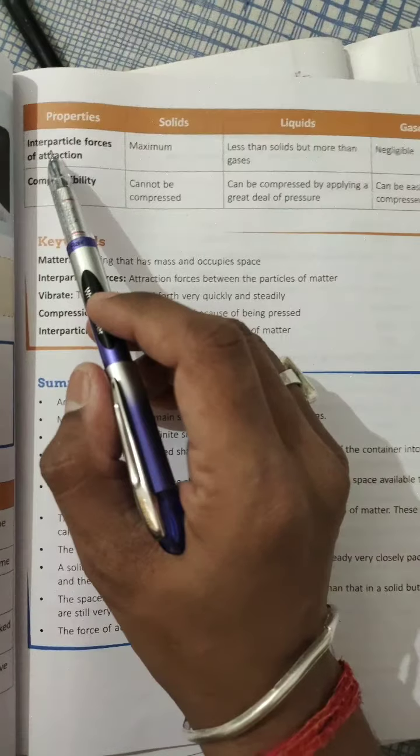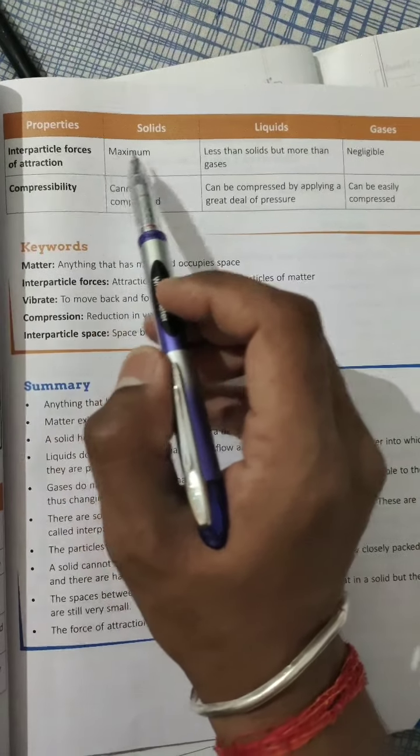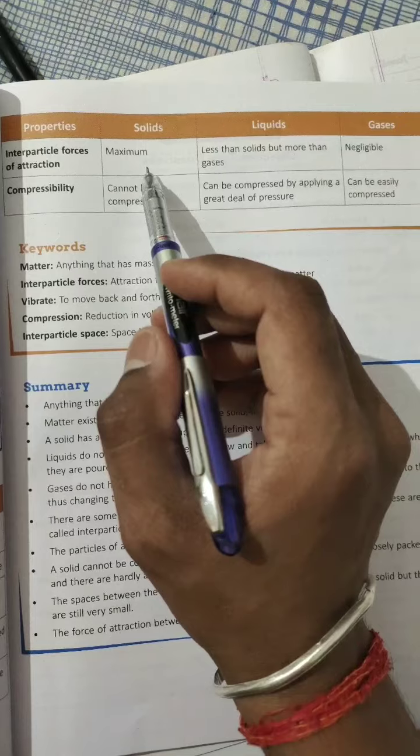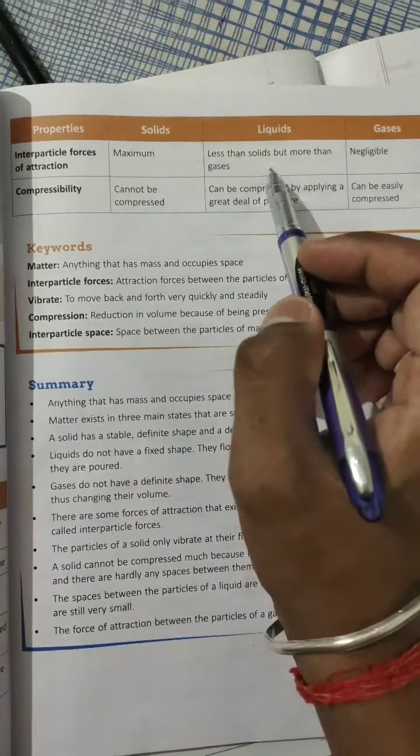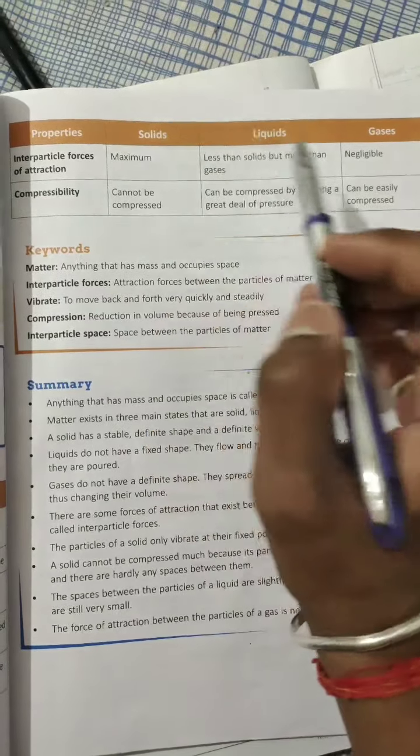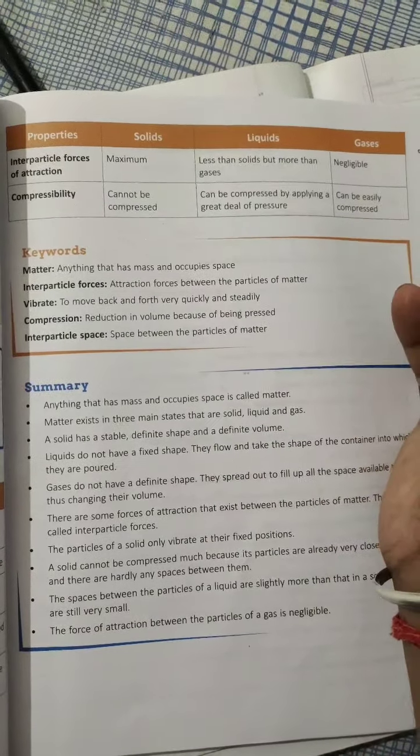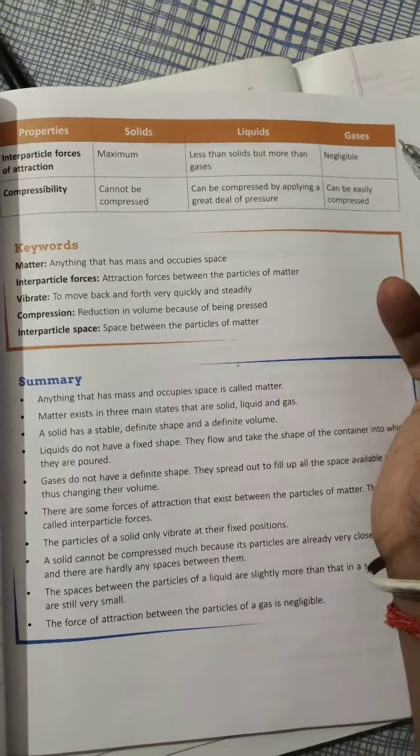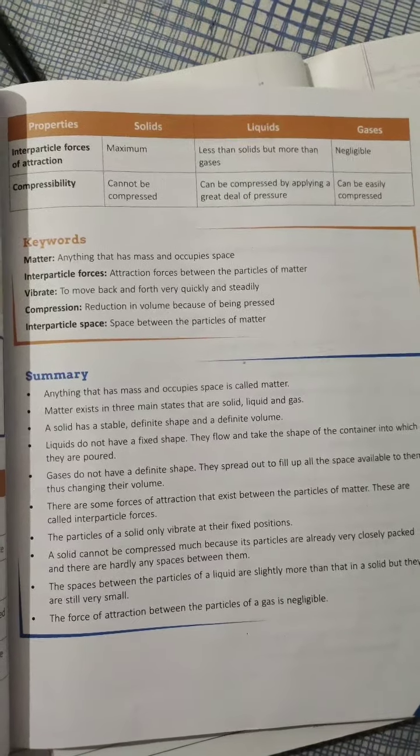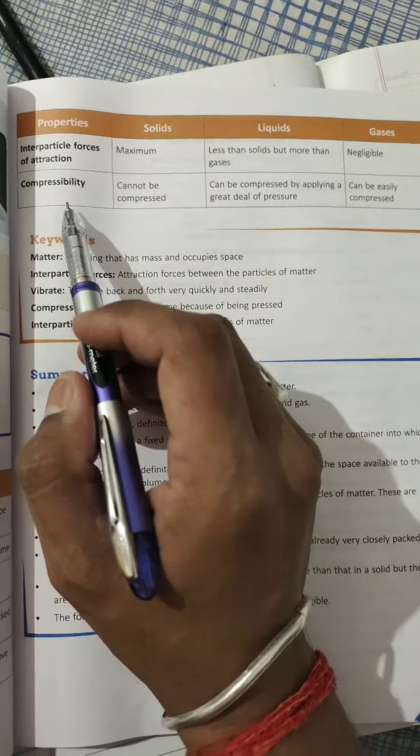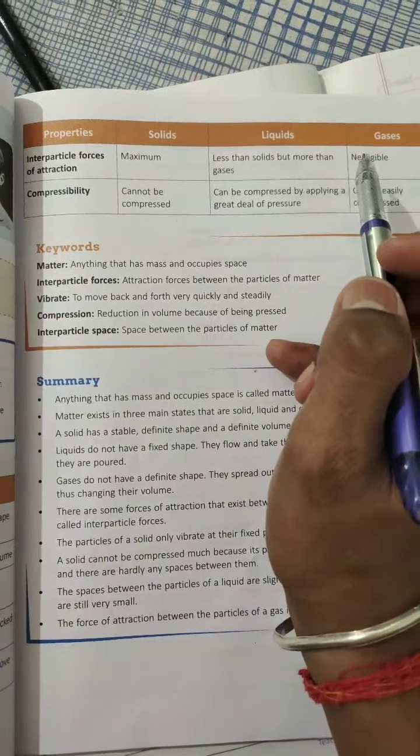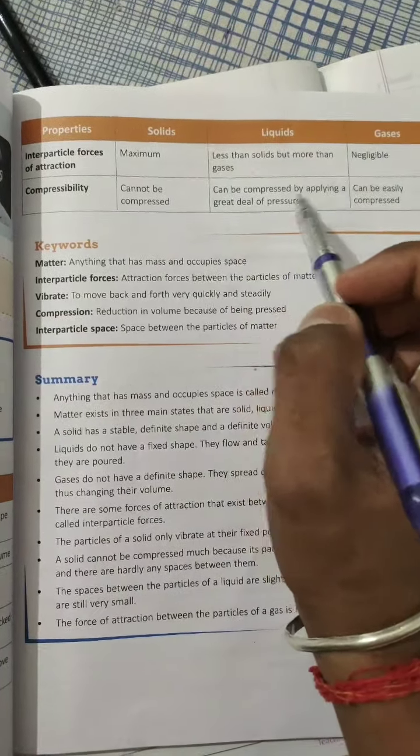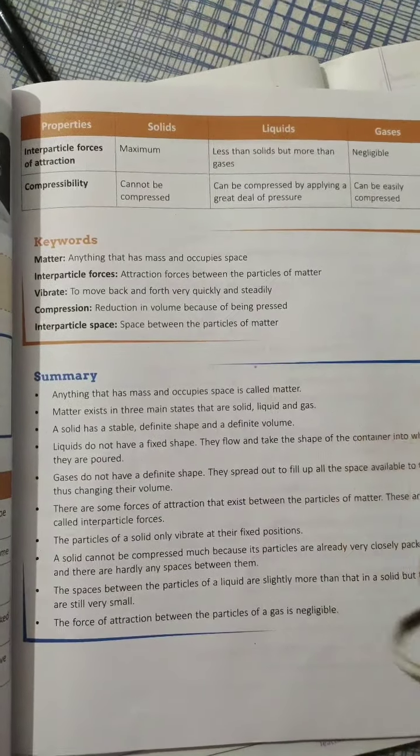Two more differences are given here. Inter-particle forces: the force of attraction between particles of the solid is much more. In liquid it is less than solid. In gases it is negligible, that's why the particles of the gases are far apart from each other. Compressibility: solid cannot be compressed. Liquid can be compressed by applying a high amount of pressure. Gases can be compressed easily.